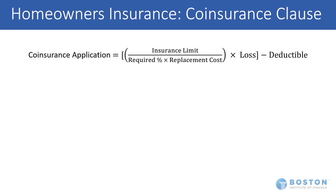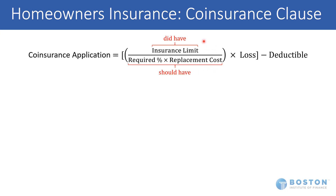So let's take a look at how this works. There is actually a formula — a little calculation for the coinsurance clause application — in which the current policy insurance limit stated in the policy is the numerator in a fraction, and the denominator is the policy's stated required percentage of the replacement cost. I call that the 'did have over should have' amounts. This is something you can remember for the national exam: did have over should have.